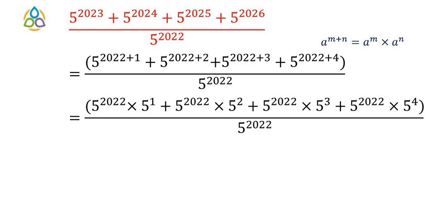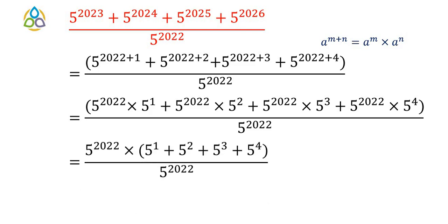Taking 5 to the power 2022 common from each term in the numerator, we get 5 to the power 2022 into the quantity 5 to the power 1 plus 5 square plus 5 cube plus 5 to the power 4, divided by 5 to the power 2022. Since 5 to the power 2022 appears in both numerator and denominator, they cancel out, leaving us with 5 to the power 1 plus 5 to the power 2 plus 5 to the power 3 plus 5 to the power 4.